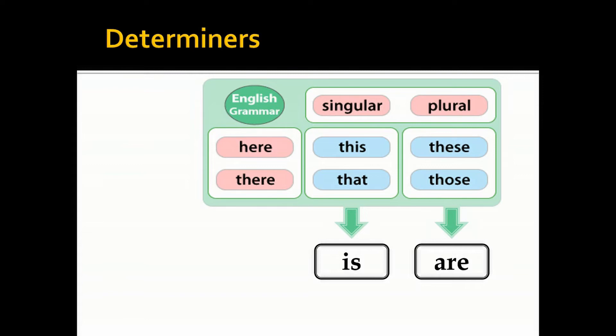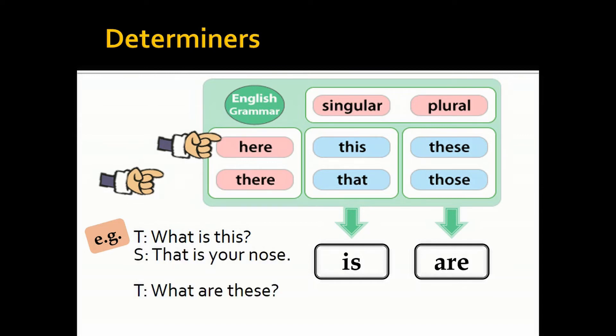Okay, next. This and these are used for something that is close or near, and then that and those are used for something that is far from you. Jadi, this dan these itu digunakan untuk benda yang letaknya itu dekat, sedangkan that dan those untuk benda yang jauh. The examples: What is this? That is your nose. What are these? Those are your ears.